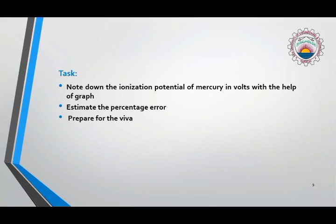The tasks are first of all you have to note down the ionization potential of mercury, then estimate the percentage error, and then prepare for the viva.